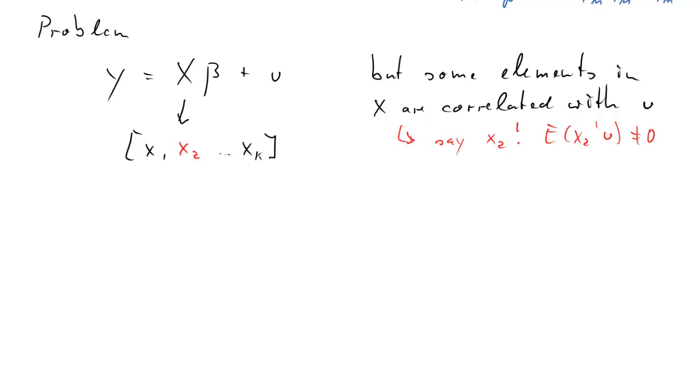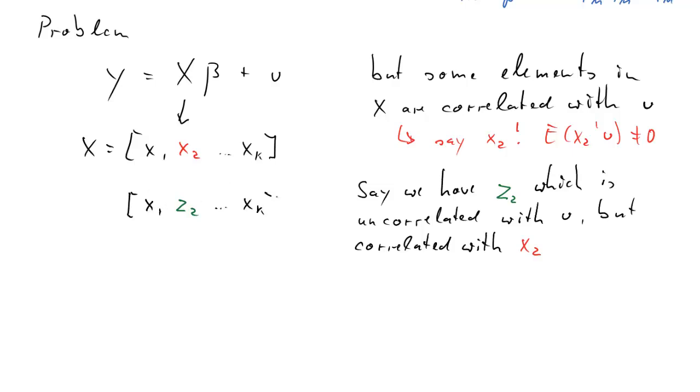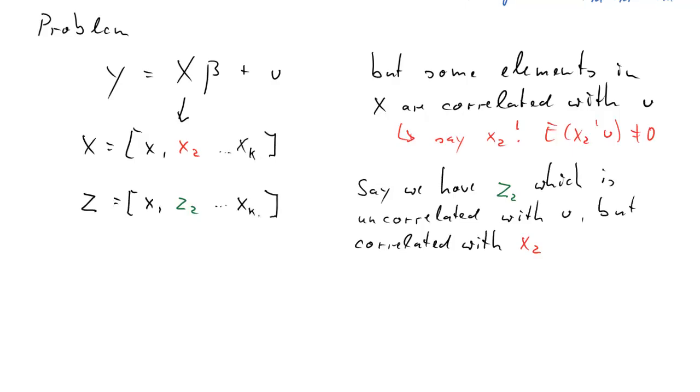So we have a problem. We know assumption A4 is breached. So this is the entire matrix X. Now say we also have another variable z2, which is uncorrelated with u and indeed correlated with x2. So it's not the same as x2, but it's related to x2, but uncorrelated to u. Now if you create a new matrix where we replace the x2 with the z2, this is now the matrix we shall call Z. It is of course possible that there is another variable in X that is correlated with the error term. We would then have to find another variable, another instrument that is uncorrelated to u and correlated with that particular x.